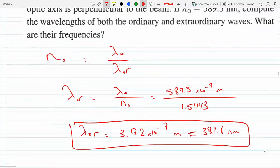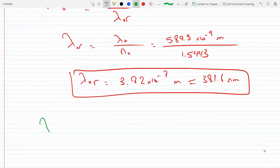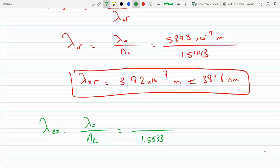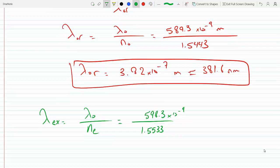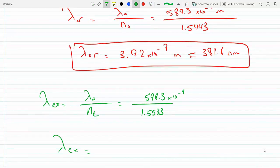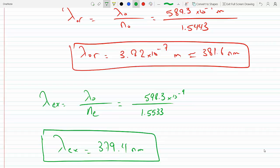We could do the same thing for the extraordinary wave. So λ_extraordinary will equal λ₀ over n_extraordinary. For calcite, from that table, it's 1.5533. This is 589.3 times 10 to the minus nine, so we get this to be 379.4 nanometers.